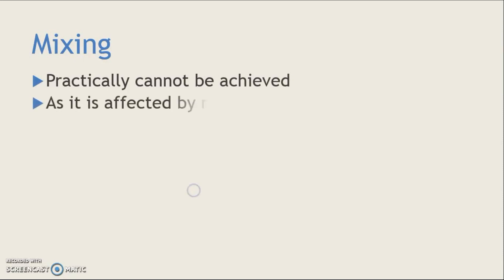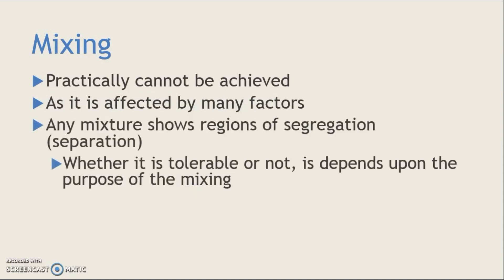Practically, this type of mixing cannot be achieved because it is affected by various factors like density of the material, size and shape of the material, quantity of the material, and many other factors. That's why practically such mixing cannot be achieved. Any mixing will show some regions of separation, also called regions of segregation. Whether these regions are tolerable or not depends upon the purpose for which mixing is carried out.